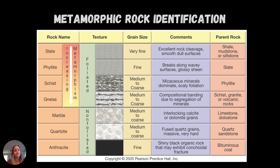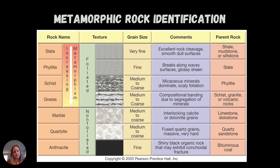The first thing with texture is: are they foliated or not foliated? That's the big deciding factor. If they're foliated, you've got slate, phyllite, schist, and gneiss. If they're not foliated, we're looking at marble, quartzite, or anthracite. We want to look to see if we have interlocking grains or interlocking crystals, or if we're looking at something that is parallel and lined up — which is the foliation. Then you would go on to grain size, and the comments tell you something about the composition.